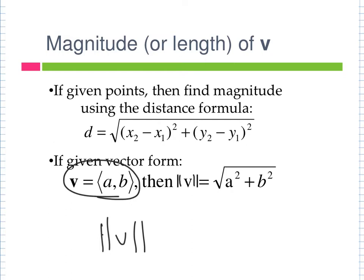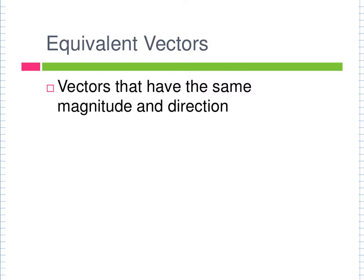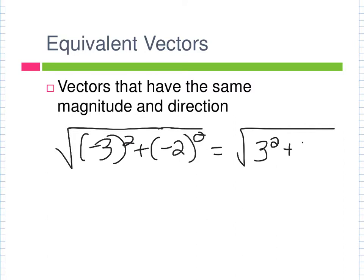Equivalent vectors have the same magnitude and the same direction — same length and same change in x and change in y, meaning the same component form. Be careful: you can have the same magnitude with a different component form, because squaring can make positives and negatives give the same result. So magnitude matching alone doesn't mean the vectors are equivalent — you need both same magnitude and same component form.